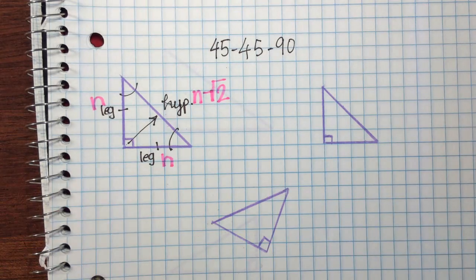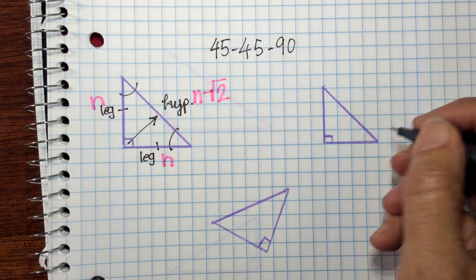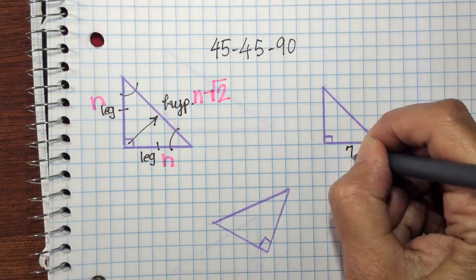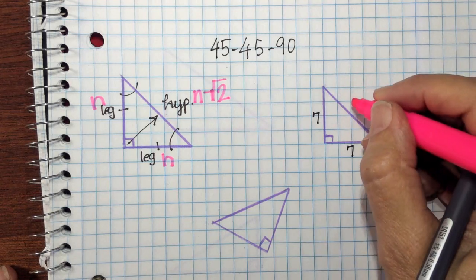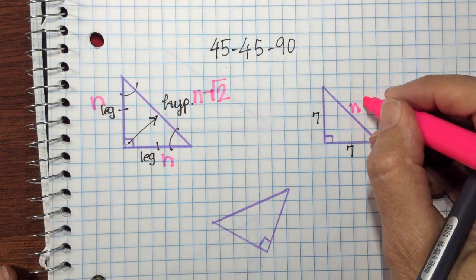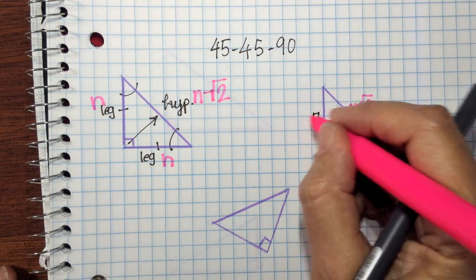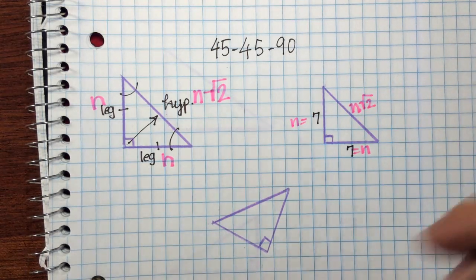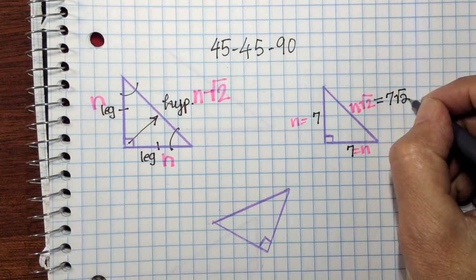You can confirm that using the Pythagorean theorem, but in this tutorial we're not going to do that. Here's how you solve this: if I know that my legs are 7, then I know the hypotenuse is n square root 2. Since my legs equal n, I substitute and get my hypotenuse is 7 square root 2.